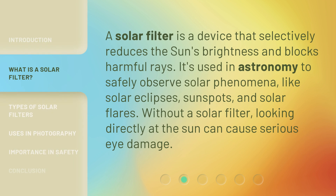A solar filter is a device that selectively reduces the sun's brightness and blocks harmful rays. It's used in astronomy to safely observe solar phenomena, like solar eclipses, sunspots, and solar flares. Without a solar filter, looking directly at the sun can cause serious eye damage.